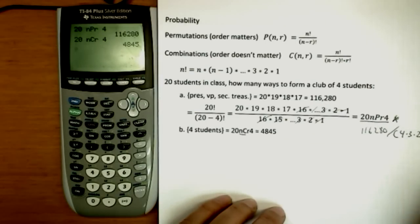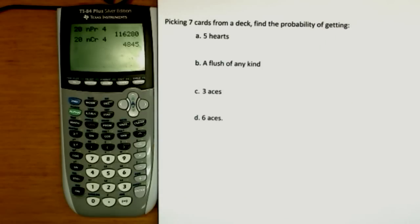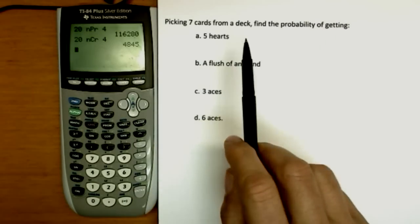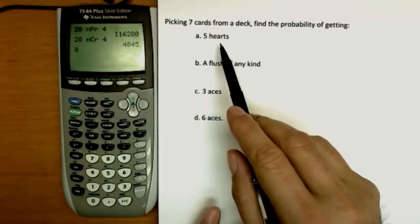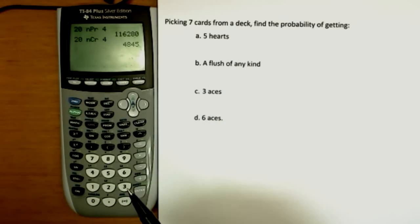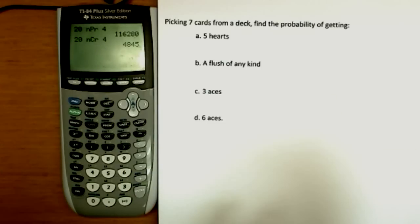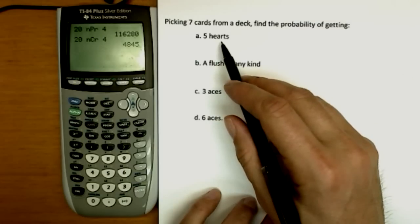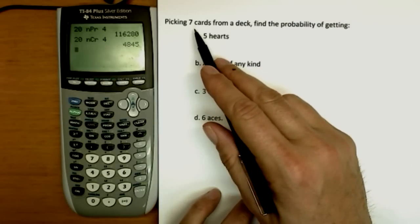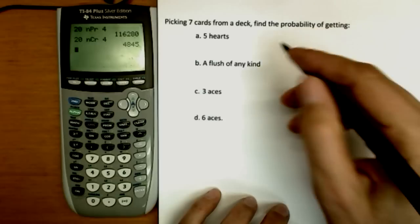Now we're going to use this to calculate some interesting problems. Let's say you pick seven cards from a deck without replacement. So you simply deal a hand of seven cards out. Find the probability of getting five hearts. We're picking five cards from the hearts. Of course, we're picking seven cards total, so we have to figure out what those other two cards are going to be.